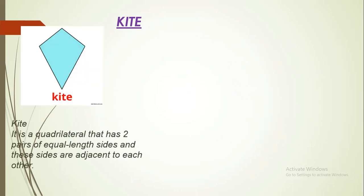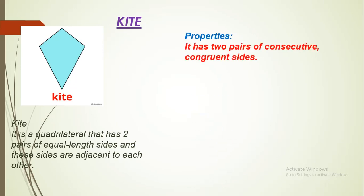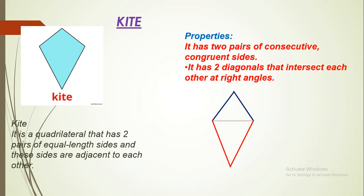Next, we have Kite. It is a quadrilateral that has two pairs of equal length sides, and these sides are adjacent to each other. Properties: it has two pairs of consecutive congruent sides — these two sides are adjacent and equal, and another pair is also adjacent and congruent. It has two diagonals that intersect at right angles.